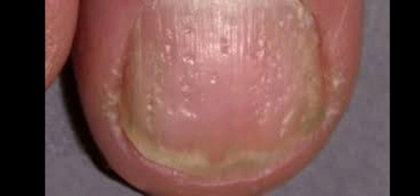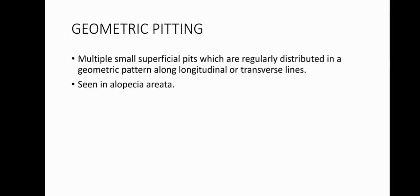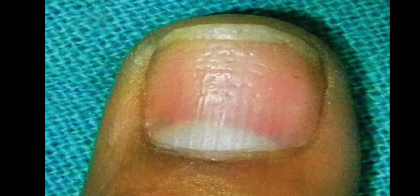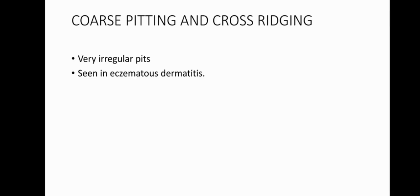Other nail features of psoriasis can also be appreciated, such as onycholysis. Geometric pitting is characterized by multiple small superficial pits which are regularly distributed in a geometric pattern along longitudinal or transverse lines. It is seen characteristically in cases of alopecia areata. This image shows geometric pitting seen in alopecia areata cases. Coarse pitting and cross-ridging is characterized by the presence of very irregular pits, which are usually seen in eczematous dermatitis.